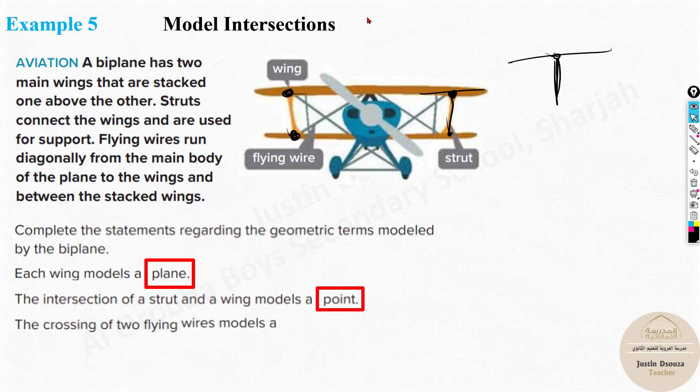And the crossing of two flying wires. Now here you can see the two flying wires have crossed each other. What is happening here? This is also a point, it intersects at a point. So again you can tell it's a point. So that's basically the answers. The intersection of a wing and a strut is a point. Even two flying wires is a point. But the each wings are basically planes. And that's the end of this lesson.